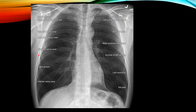So this is basically the X-ray. As we said: IVC, right atrium, superior vena cava on the right side; and left ventricle, left atrial appendage, main pulmonary artery, and aortic arch on the left side.